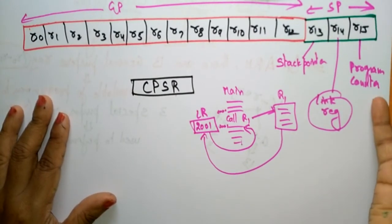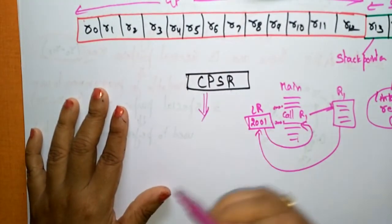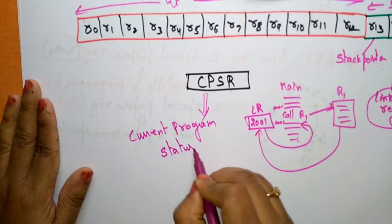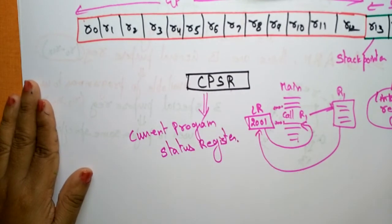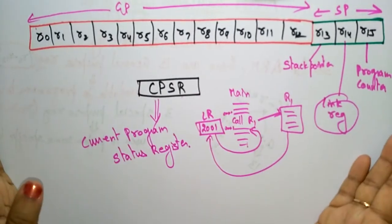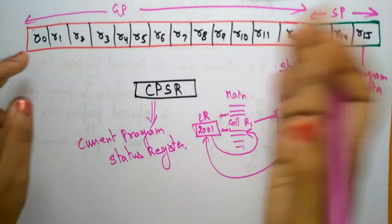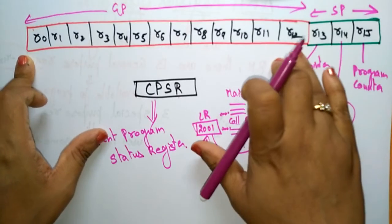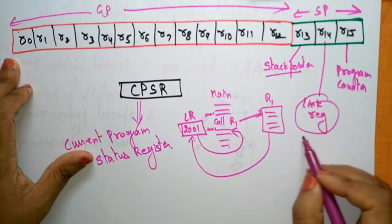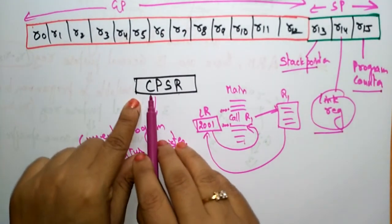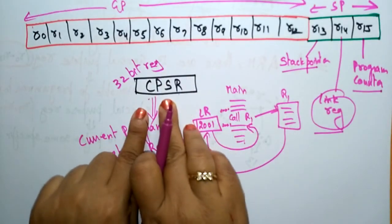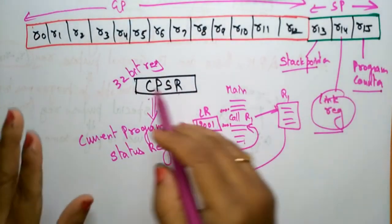R15 is the program counter, which stores the address of the next instruction to be executed. Then there is CPSR — C for Current, P for Program, S for Status, R for Register — the Current Program Status Register. It is a 32-bit register. So to summarize: R0 to R12 are general purpose registers, R13 is the stack pointer, R14 is the link register, R15 is the program counter, and CPSR is the current program status register. In the next video I'll explain what CPSR does.